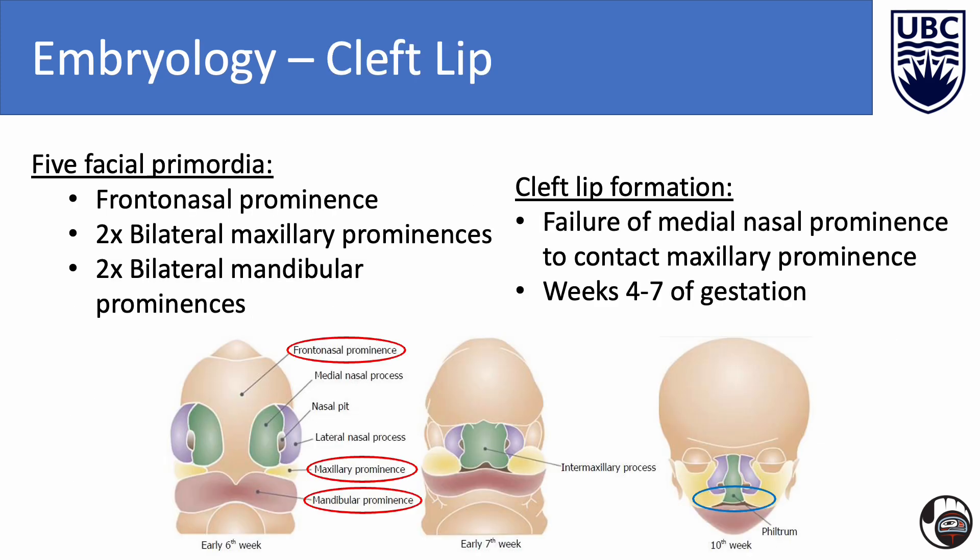Oral clefts are of embryonic nature, thus having a strong understanding of embryology is essential. To understand the embryological origin of cleft lip, we must first understand that the face forms from five facial primordia as circled in red. The lip forms during weeks 4 to 7 when the medial nasal prominence, in green, contacts the maxillary prominence, in yellow, in the 10th week, as circled in blue. The failure of this process results in cleft lip.